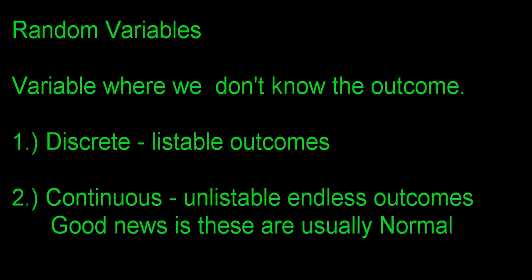There are two types of random variables. The first type is a discrete random variable. With discrete random variables, you can list all outcomes. Rolling that die is discrete because I can list everything that can happen: one, two, three, four, five, six.